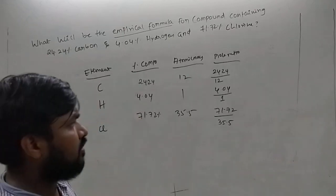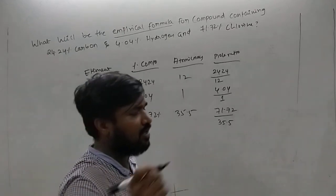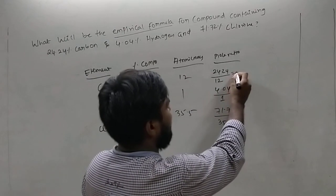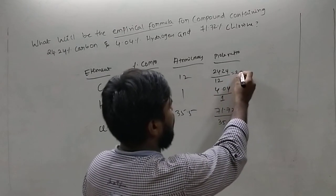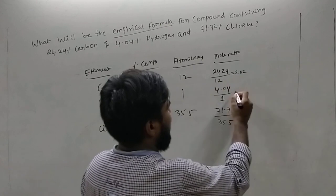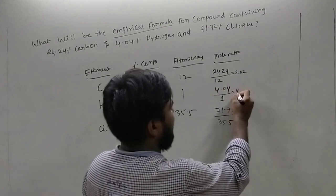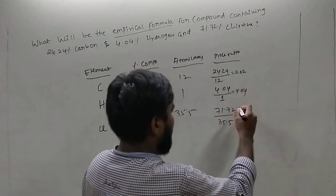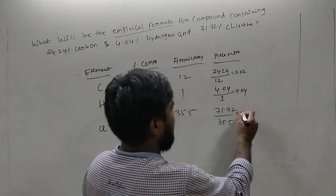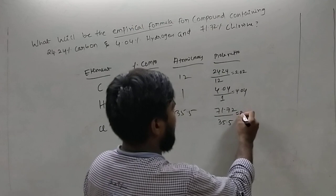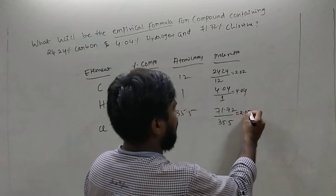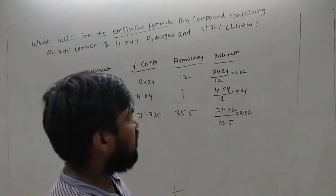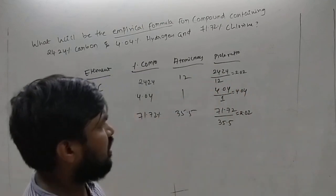So calculating those mole ratios: carbon gives 2.02, hydrogen gives 4.04, and chlorine also gives 2.02. These are our mole ratio values.